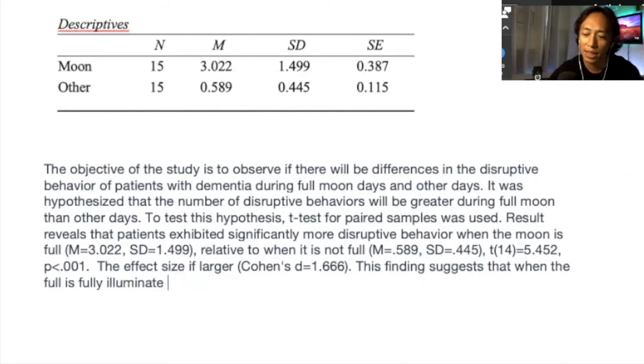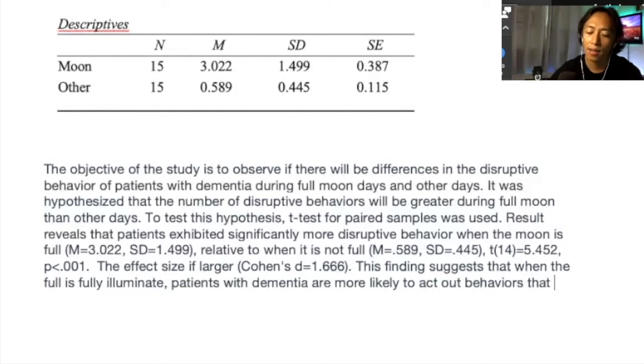So what I try to do here is instead of saying disruptive behavior and full moon, I normally go by the meaning of this or the definition of this. I don't exactly know what the definition of disruptive behavior is. So I'm going to sort of wing it when I write this part. But let's imagine that I read the literature about full moon and about disruptive behavior. And what I'm saying is actually accurate. So I'm going to say the finding suggests that when the moon is fully illuminated. So I'm not just saying it's full moon. It's fully illuminated. This finding suggests that when the moon is fully illuminated, patients with dementia are more likely to act out behaviors that are relatively destructive.